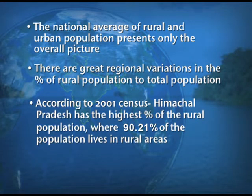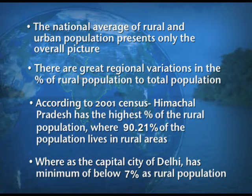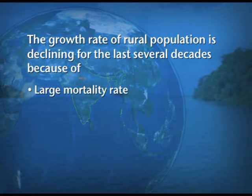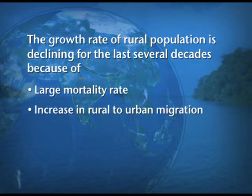According to 2001 census, Himachal Pradesh has the highest percentage of rural population at 90.21 percent, whereas comparing with Delhi, the minimum of only 7 percent of the population is rural. The growth rate of rural population is declining for the last several decades due to large mortality rate and increase in rural-to-urban migration, which is an important factor responsible for the rise in urban population.